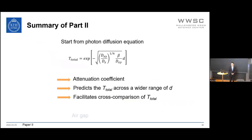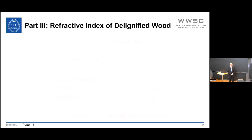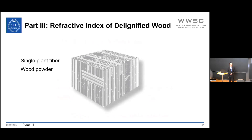Air gaps influence total transmittance mainly through scattering. However, the refractive index mismatch between wood substrate and polymer also influences total transmittance and scattering. Previously, the refractive index of cellulose-based materials was mainly measured from single plant fibers or wood powders, without considering the complex wood structure. If an accurate value can be measured, it becomes possible to select suitable polymers for transparent wood products. To achieve this, the liquid immersion method is applied.